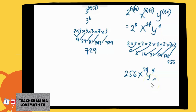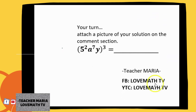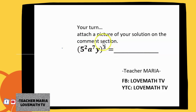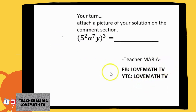Now it's your turn. We have 5 squared, a raised to 7, y — and all of this is raised to 3. Please attach a picture of your solution in the comment section. Follow our Facebook page and YouTube channel, LoveMathTV, and please like and share this video.